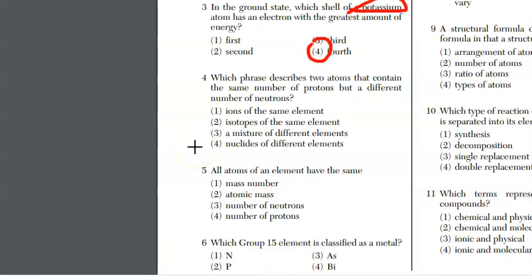Going on to number 4, which phrase describes 2 atoms that contain the same number of protons with different number of neutrons. This is the definition for isotopes. For number 5, all atoms of an element must have the same number of protons. The number of protons we get from the atomic number and from the symbol of the element.